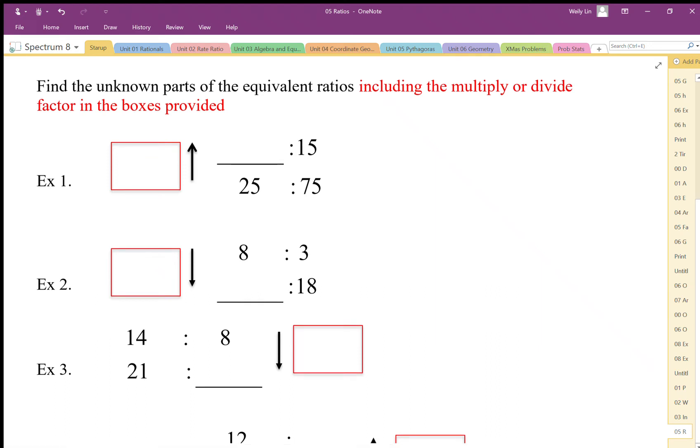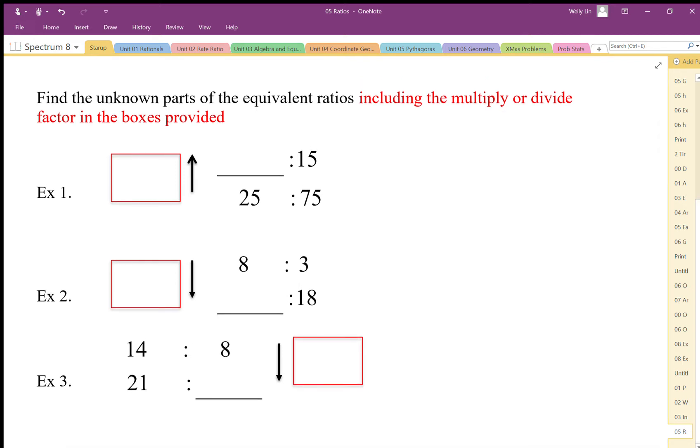So here we have our ratios. We're going to try to find some equivalent ratios. I want you to make sure that you first can find the equivalent ratio parts, but also I want you to show me the multiplying and dividing factor involved here.